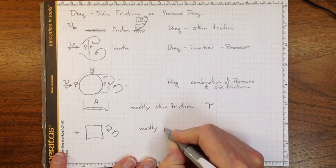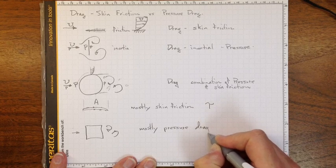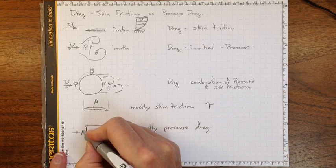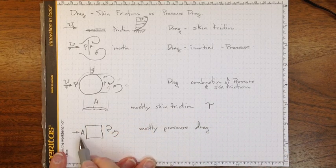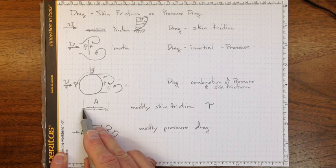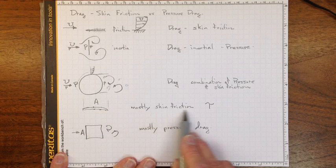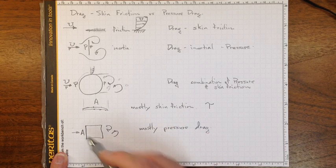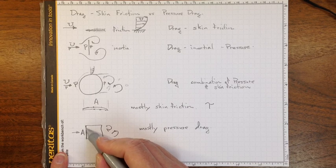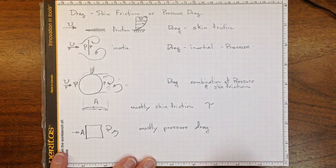and it's mostly dependent on the size of this area out here that that pressure acts on. So the shear stress is acting on this surface that's producing skin friction drag, or the pressure is acting on this surface, the projected area towards the flow, and that's leading to the pressure drag.